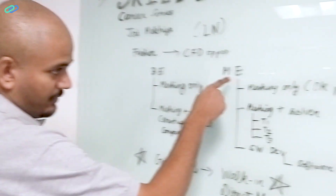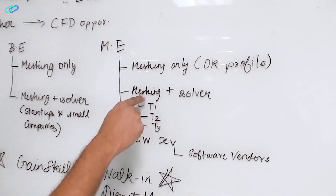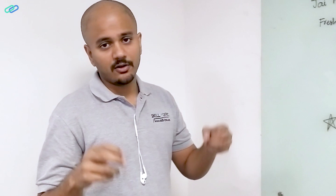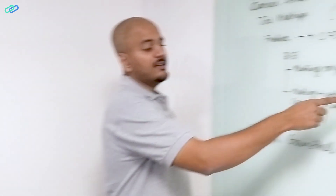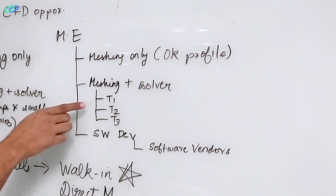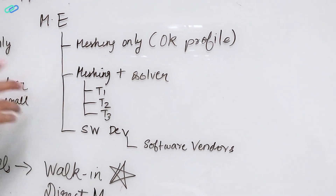If you're ME and have a decent profile, getting a meshing plus solver-related job — what I call a CFD engineer or application engineer job — becomes easy. Again, depending on your GPA, you can get into tier 1, tier 2, or tier 3 companies. If you don't know what those are, check out the link below for a video.